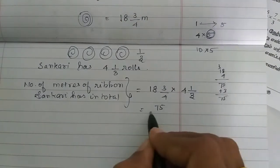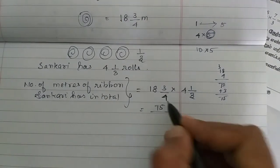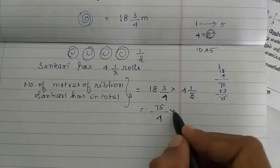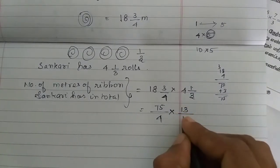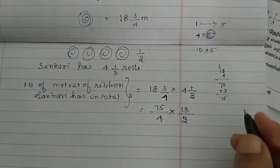So, 75 by this denominator is 4. That is, 4. That is, 4 3 is 12 plus 1. 13. 13 by 3 is 3. So, what do you do with this? If you have to do this, you have to do this.